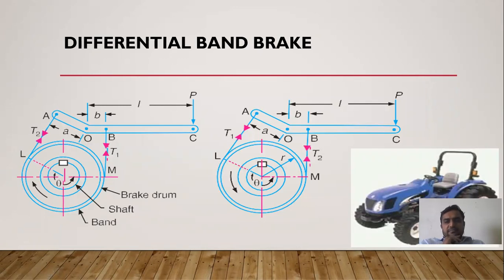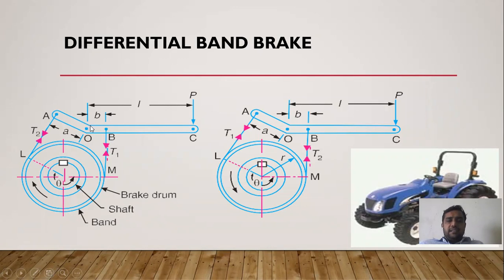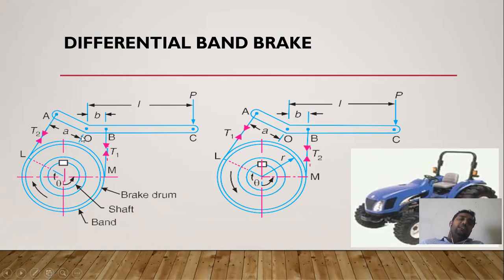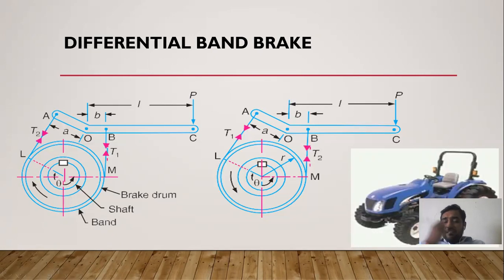Now we discuss differential band brakes, which are a modification of simple band brakes. In a simple band brake, one end of the band is connected to O and the other to B. In a differential band brake, the lever is extended from O to a point A, and the two ends of the band are attached at distances b and a from the fulcrum. There are now three moment arms: P*l, T1*b, and T2*a.